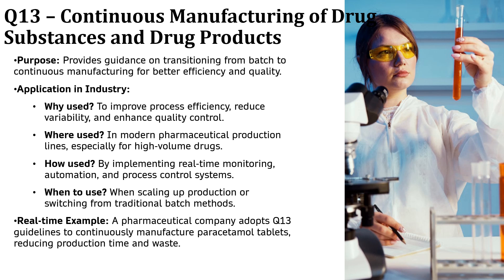Now let's talk about ICH Q13, Continuous Manufacturing of Drug Substance and Drug Products. This guideline is a game-changer for the pharmaceutical industry because it moves away from traditional batch production to a more efficient automated process called continuous manufacturing. Batch manufacturing can be slow, inconsistent and wasteful, while continuous manufacturing offers better efficiency, real-time quality control and reduced production time. For example, imagine a pharma company producing paracetamol tablets. Instead of making them in batches, they adopt continuous manufacturing, allowing them to produce tablets faster, reduce waste and improve real-time quality control. ICH Q13 is shaping the future of pharmaceutical production, making medicines safer, more consistent and available faster for patients worldwide.